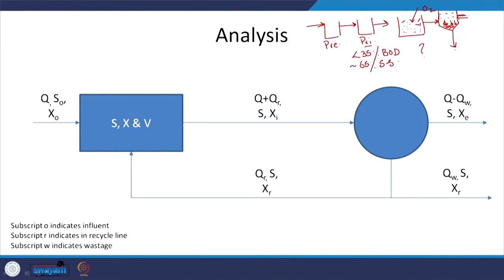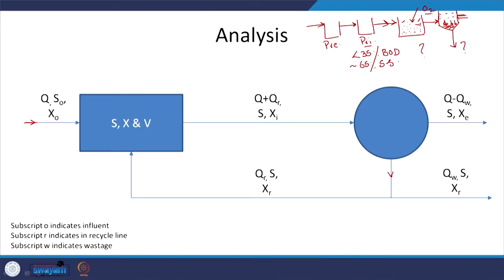We do not always waste all the sludge. In our sewage we have microorganisms, but the kind that lead to degradation of our waste are not typically present — the incoming microorganisms are enteric and will not assist in degrading waste. So where does the source of microorganisms in the aeration tank come from? We recycle part of the settled sludge, which is why it is called the activated sludge process. Depending on the need, some will be wasted, and here we get our treated water.